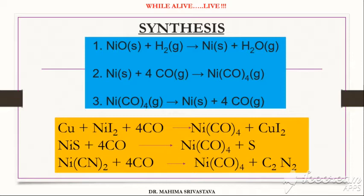In step one, nickel oxide (NiO), a solid, reacts with syngas at 200 degrees centigrade to provide nickel along with some impurities which include iron and cobalt. Syngas is a short form of synthesis gas, which is a fuel gas mixture primarily consisting of hydrogen and carbon monoxide, but it might have some traces of carbon dioxide.